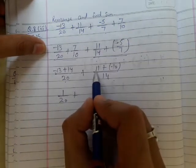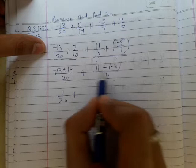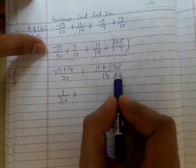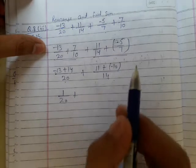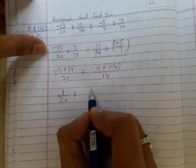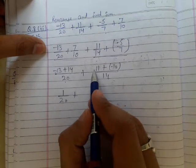For the second pair, 11 and -10 have different signs, so we take their difference, which is 1. This is positive because 11 has the larger numerical value, giving us 1/14.